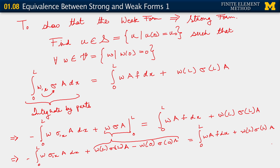Now, since we are already quite expert at invoking our boundary conditions, it should be obvious what to do in the next step. In particular, focus on the term with the upper brace bracket. What we do here is observe that that term goes to 0. That is so because w does indeed belong to the space V, and we have that homogeneous Dirichlet boundary condition upon it — w at 0 equals 0. So that last term disappears.